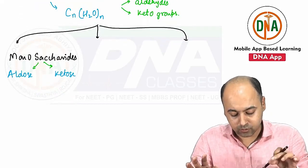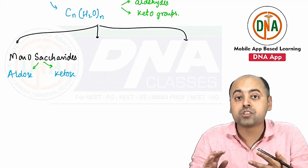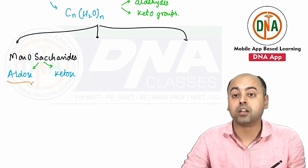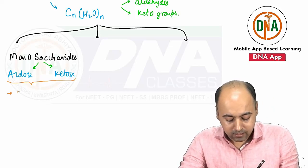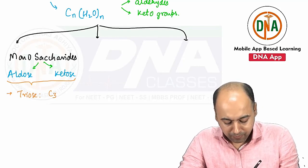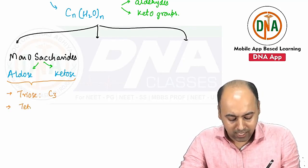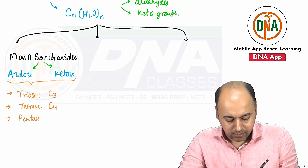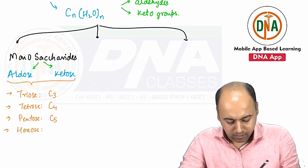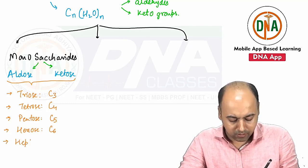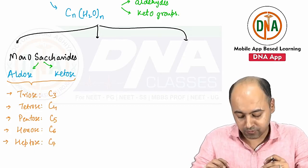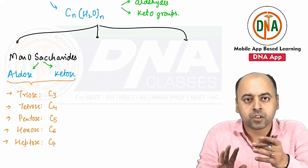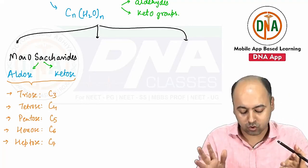In addition to this, the number of carbons in different monosaccharides also varies. You can have three, four, five, six, or seven carbons. Based on that distinction, monosaccharides can be further labeled as triose (three carbons), tetrose (four carbons), pentose (five carbons), hexose (six carbons), and heptose (seven carbons).